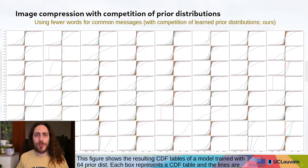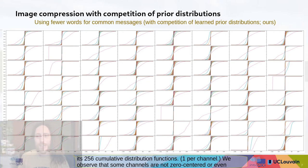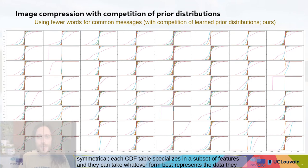This figure shows the resulting CDF tables of a model trained with 64 prior distributions. Each box represents a CDF table and the lines are its 256 cumulative distribution functions, one per channel. Each CDF table specializes in a subset of features and they can take whatever form best represents the data they specialize on.